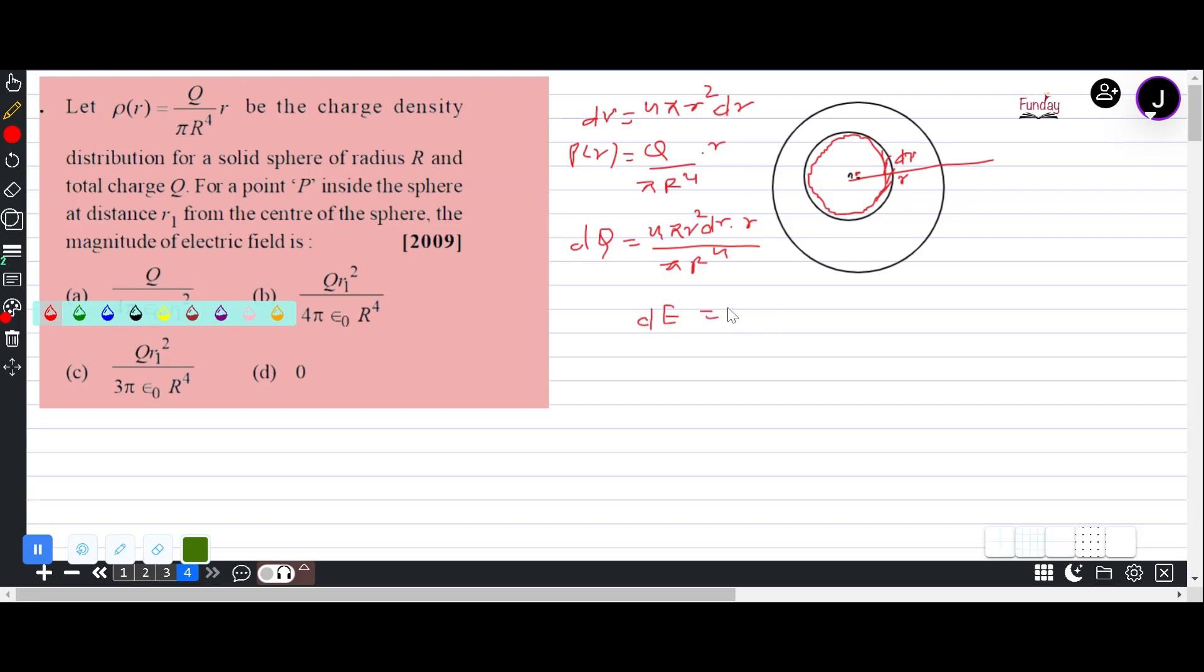Now we will find dE. So electric field dE will be (1/4πε₀) × (dQ/r²). In this case this will be r².